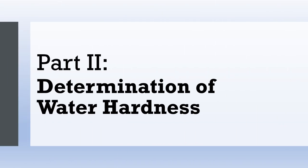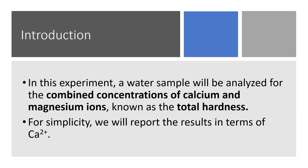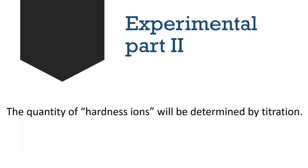Part Two: determination of water hardness. In this experiment, the water sample will be analyzed for the combined concentration of calcium and magnesium ions, known as the total hardness of water. For simplicity, we will report the total amount of calcium and magnesium ions as the concentration of calcium ion only. This quantity will be determined by the titration method.